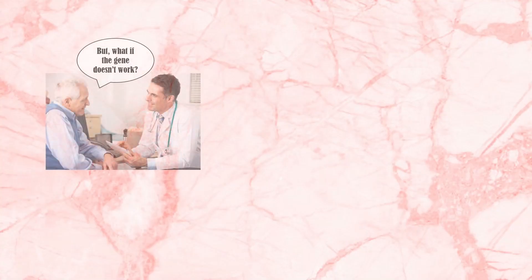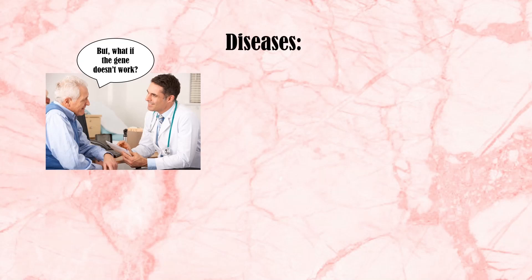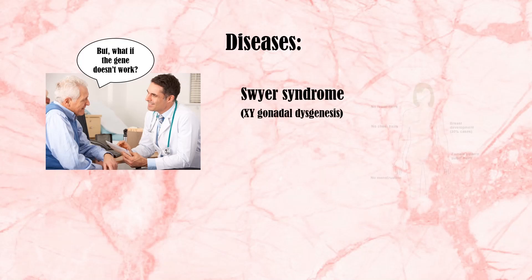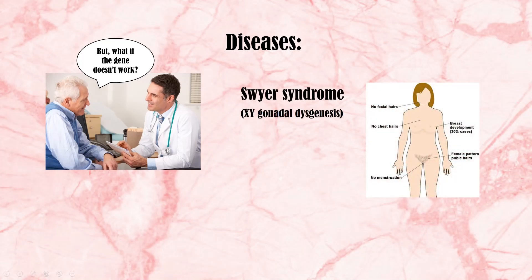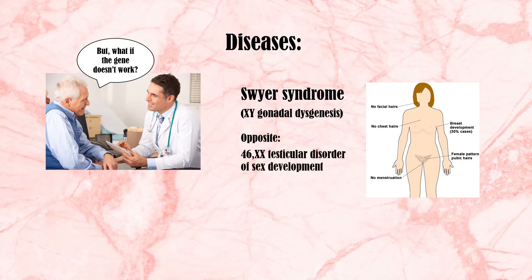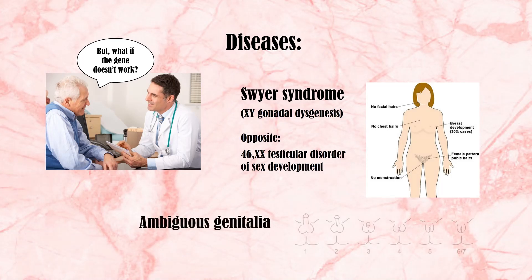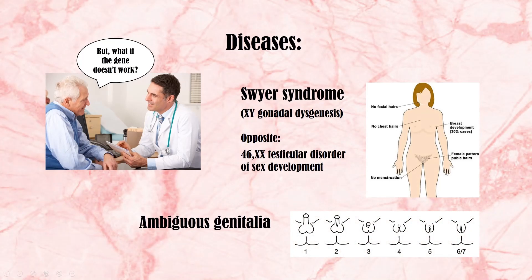There are several disorders and mutations that can take place when the SRY gene doesn't work. Swyer's syndrome is a condition in which sexual development doesn't match the individual's chromosomal makeup — individuals with one X and one Y chromosome have female reproductive structures, but their gonads are not functional. The opposite is 46XX testicular disorder of sex development, where individuals with two X chromosomes have a male appearance. Other mutations in the SRY gene might cause ambiguous genitalia or other abnormalities of the reproductive organs.